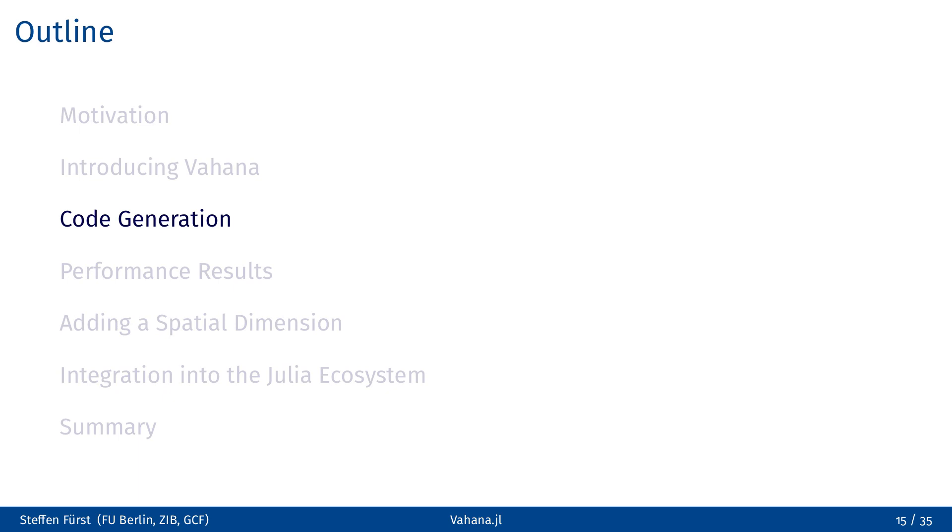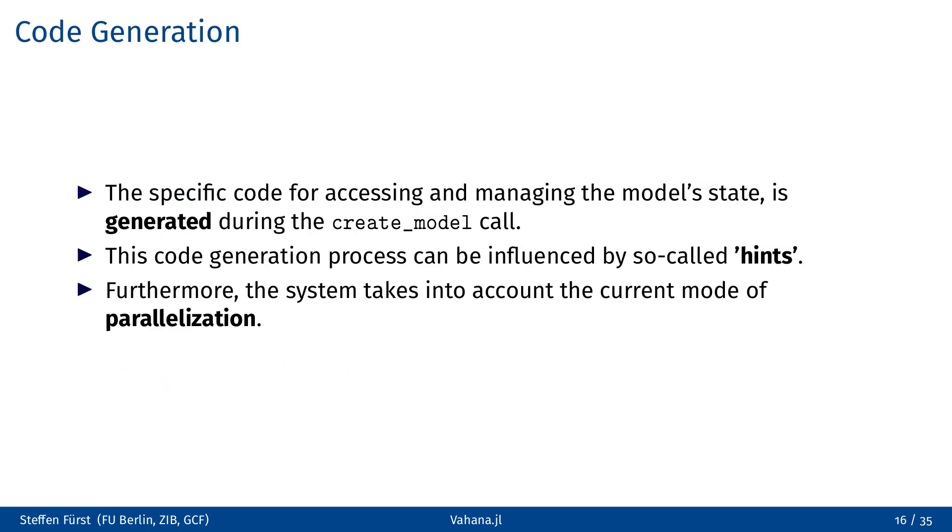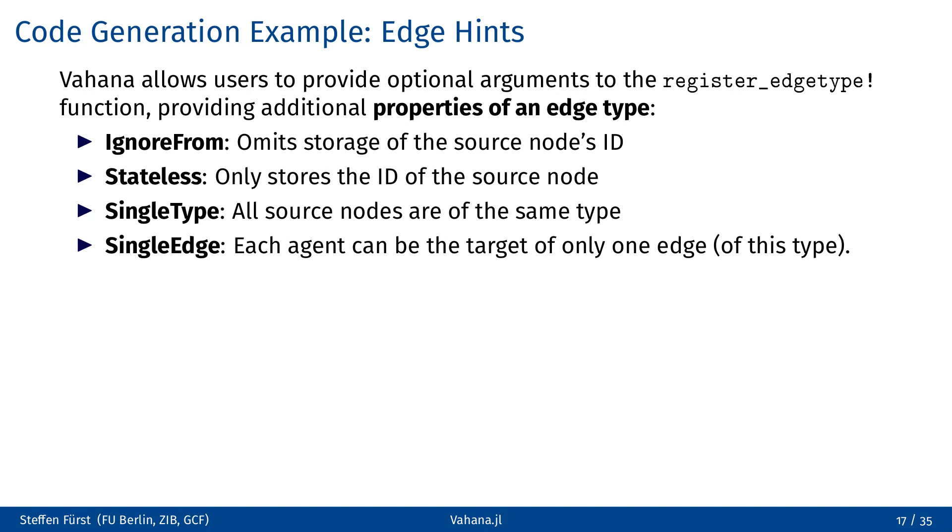Let's now shift our focus to some implementation details of Vahana. In Vahana, the specific code for accessing and managing the state of the model is generated dynamically during the create model function call. This code generation process can be influenced by so-called hints to improve performance. Let's look at one example to understand this better, namely the edge hints. The edge hints are additional properties of an edge type which can be set by optional arguments of the function register edge type. For instance, when we provide the ignore_from hint, Vahana does not store the id of the source vertex. On the other hand, if we add the stateless hint, then Vahana keeps only the id of the source vertex. If we add both, only the number of edges are counted. The single type hint tells Vahana that all source vertices have the same type, and the single edge indicates that each agent is the target of just one edge of a particular type.